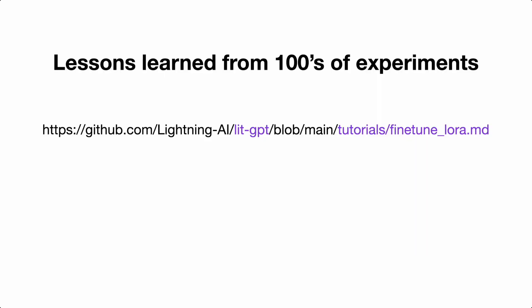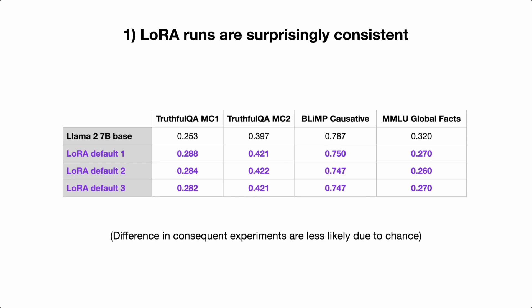I wanted to share a few results from running hundreds, if not thousands, of experiments. There are also tutorials on GitHub if you want to run LoRA fine-tuning yourself. One thing I found very nice is that LoRA runs are surprisingly consistent — when I changed the random seed, the results were pretty consistent across runs. So you know the results are approximately reproducible, and outliers are less likely due to the random seed or chance.